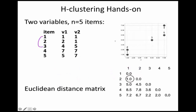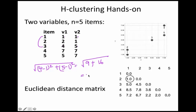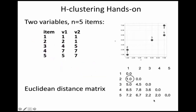The distance between items 1 and 3: (4 − 1)² + (5 − 1)² = 9 + 16 = 25, and the square root of 25 is 5. So the distance between 1 and 3 is 5. In that way you calculate all pairwise distances: 1&2, 1&3, 1&4, 1&5, 2&3, 2&4, 2&5, 3&4, 3&5, and 4&5, and you create a distance matrix.